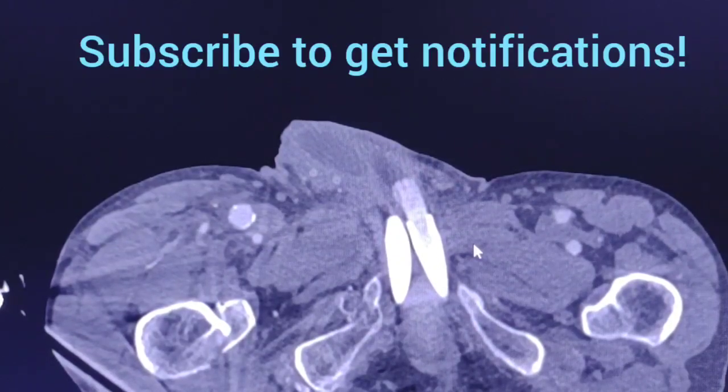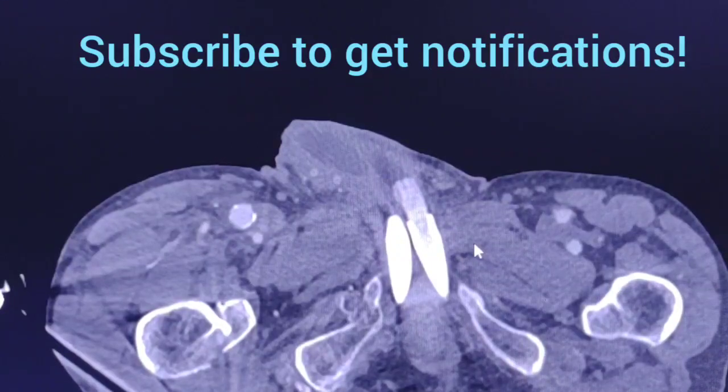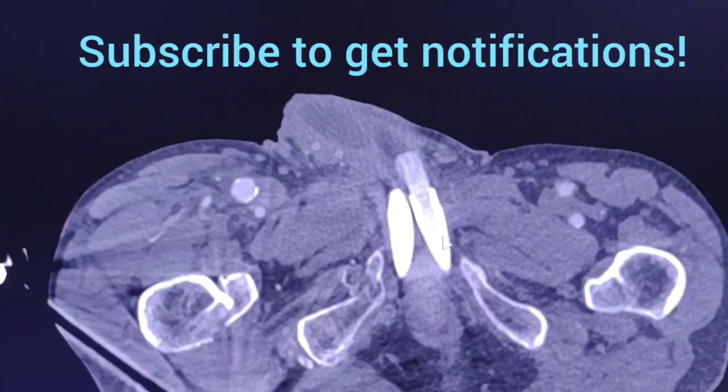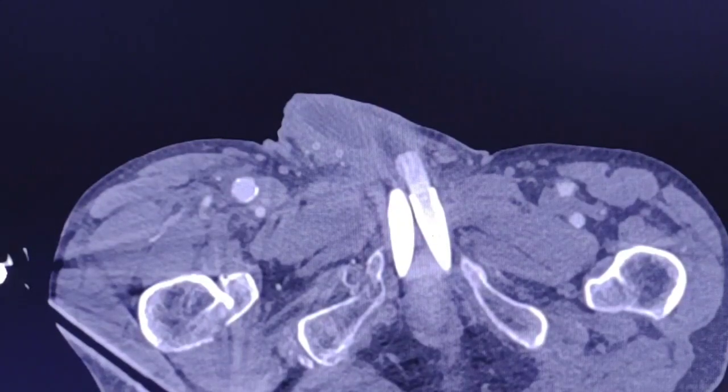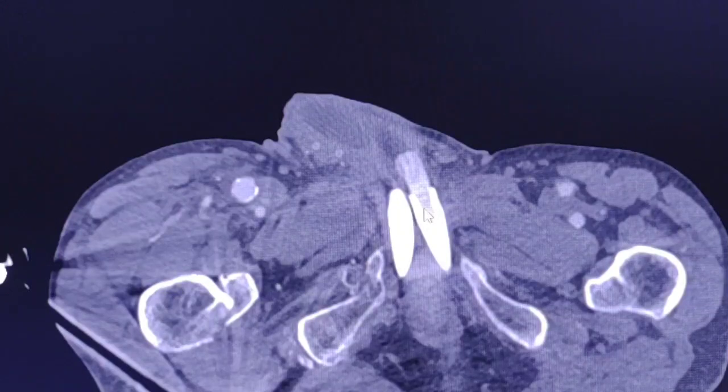In our case we have a three-piece hydraulic inflatable penile prosthesis and it consists of two cylinders. You can see here the two cylinders within the corpora cavernosa.